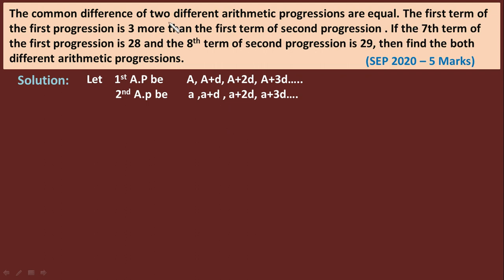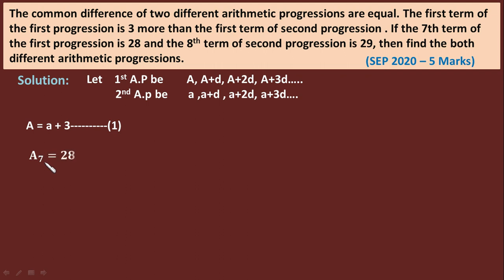It is given that the first term of the first progression is 3 more than the first term of the second progression. The first term of the first progression is capital A, and the first term of the second progression is small a. So we write: capital A = small a + 3. This is equation 1. Next, the seventh term of the first progression is 28, so capital A₇ = 28.